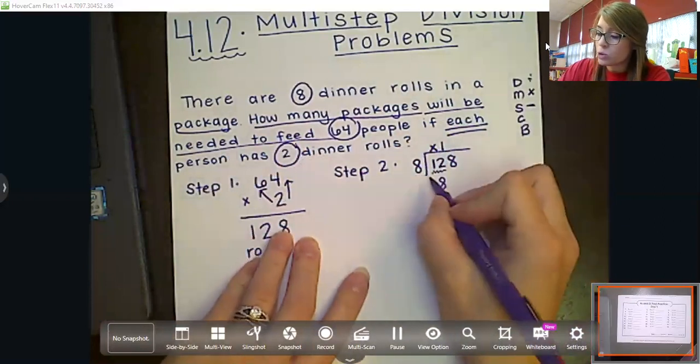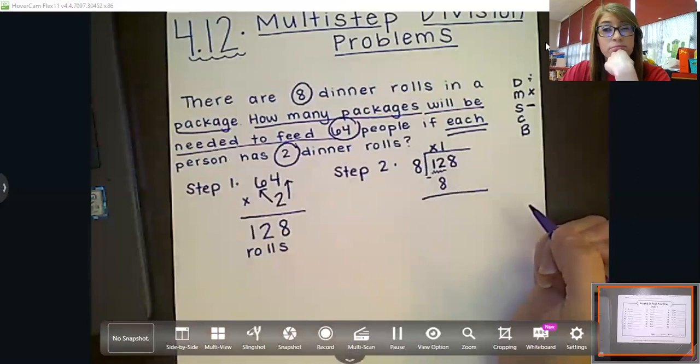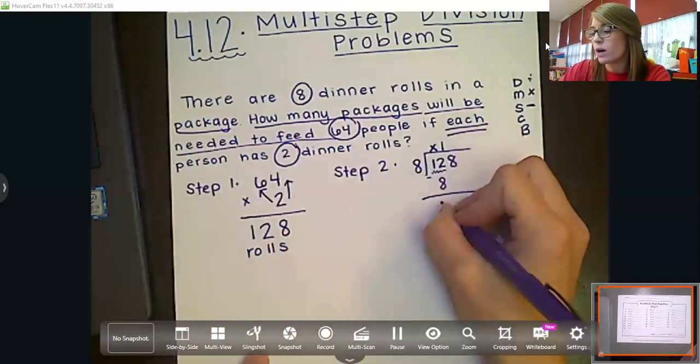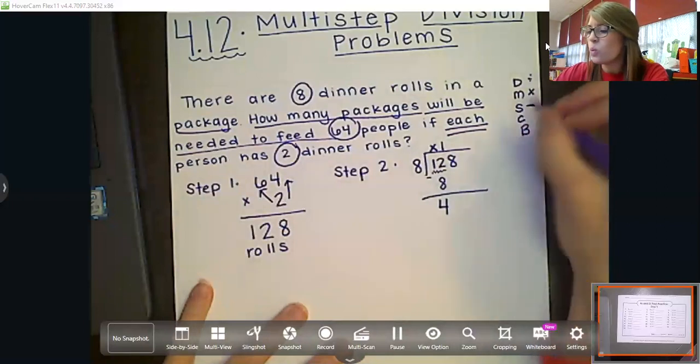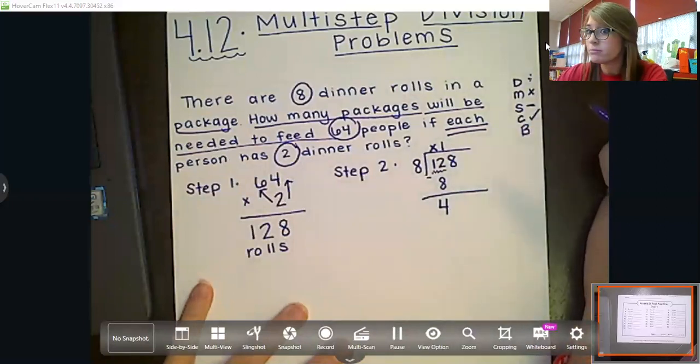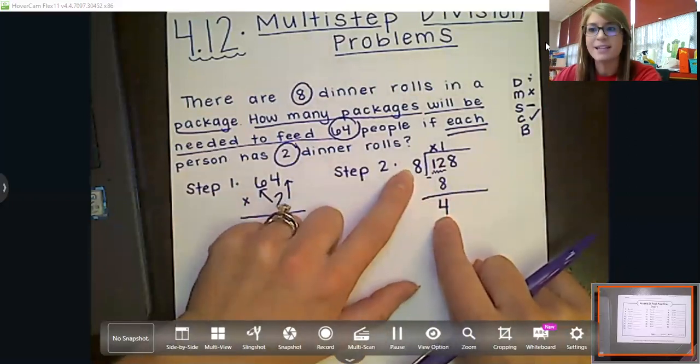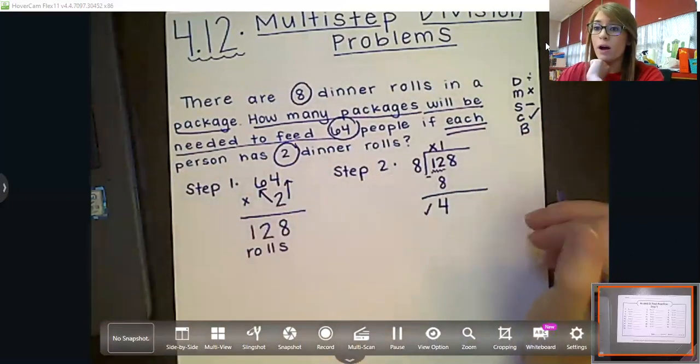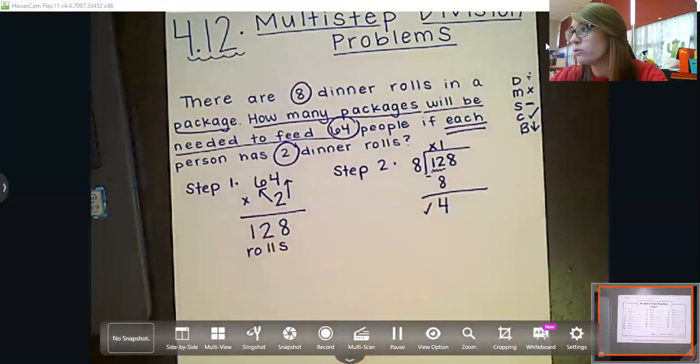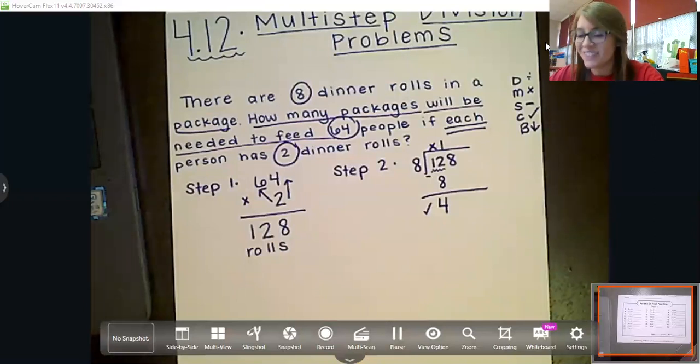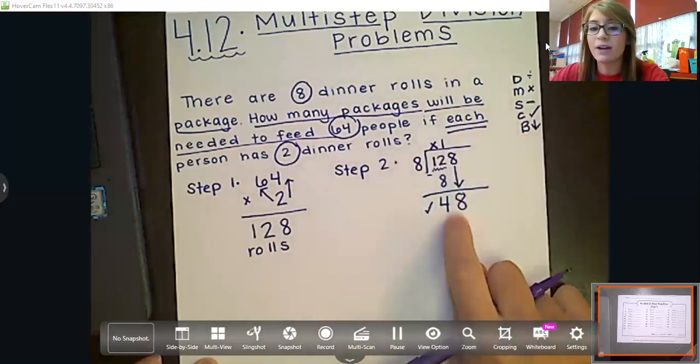So then I'm going to subtract 12 minus eight gives me, good job, gives me four. So I'm going to place that four right here. Then I have to check. What am I checking for? Right. I need to say self is four less than eight. And yes, it is. So I'm going to be like, okay, I can move on now to my next step, which is to bring down. What am I bringing down? Not the roof, not the house. What am I bringing down? Very good. This eight right here. So now I've got 48.